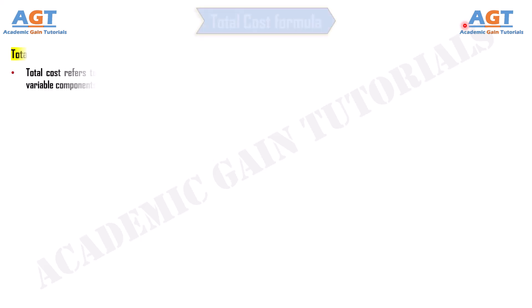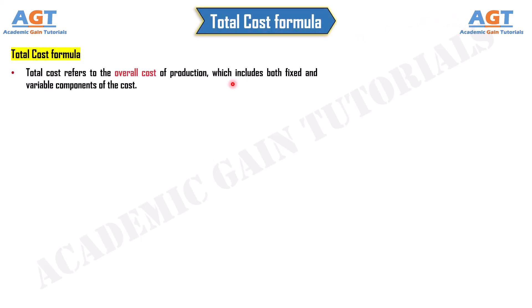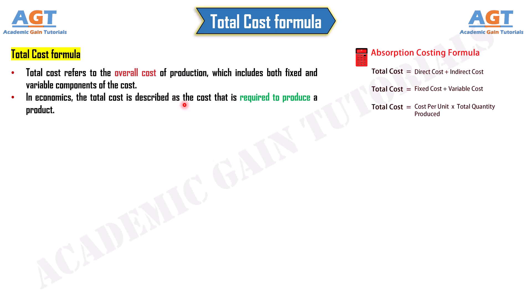Total cost refers to the overall cost of production, which includes both fixed and variable components. In economics, the total cost is described as the cost that is required to produce a product.